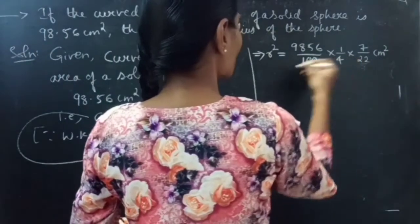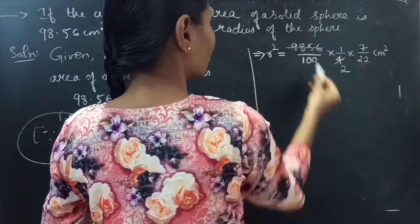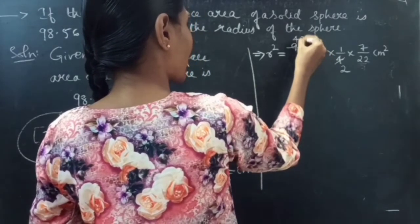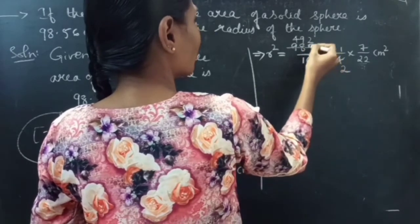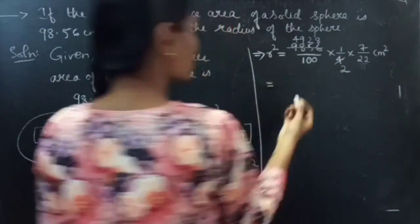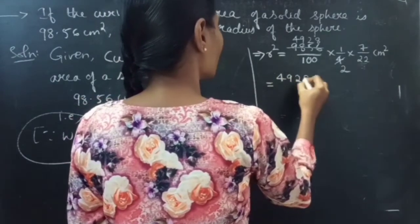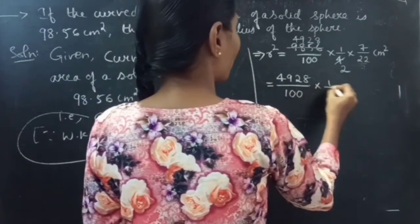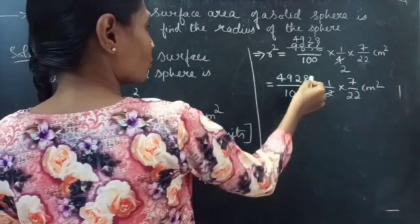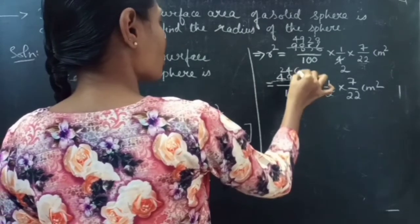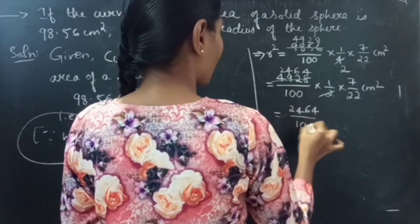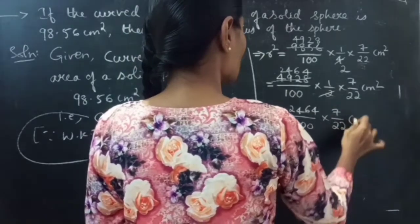Now using the multiplication table: 2×2=4, 2×4=8, 2×9=18, 2×2=4, 2×8=16 — working through the multiplication. This gives us 4928/100 × (1/2) × (7/22) cm². Continuing: 2464/100 × 7/22 cm².